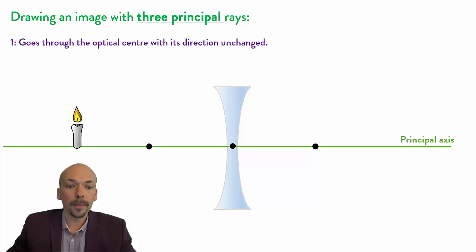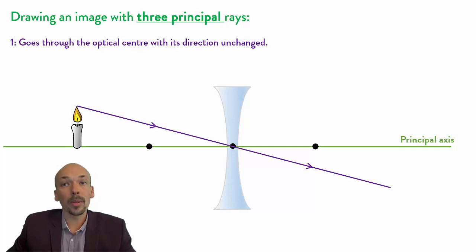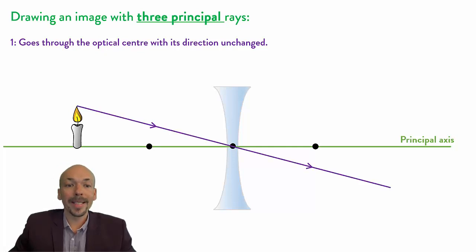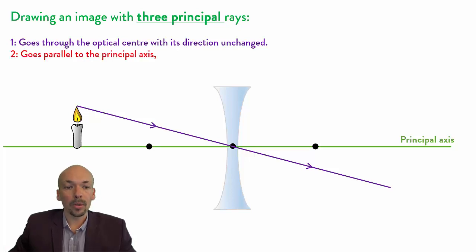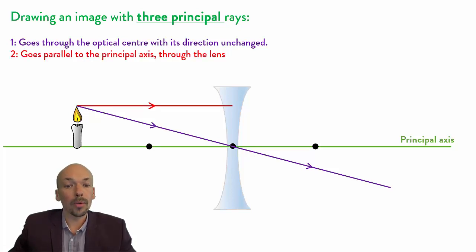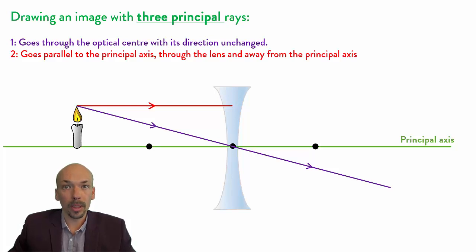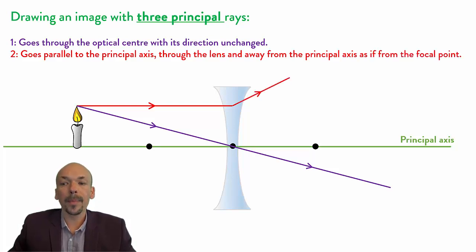The first one goes through the optical center and its direction is unchanged, so it looks like this. The second principal ray goes parallel to the principal axis, then it goes through the lens and away from the principal axis as if from the focal point.